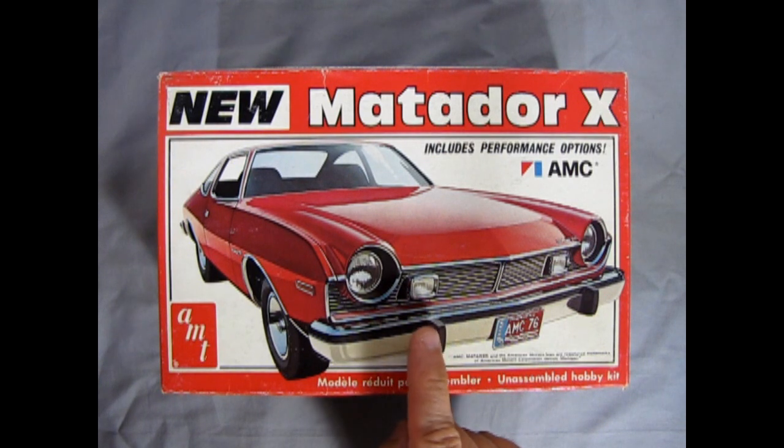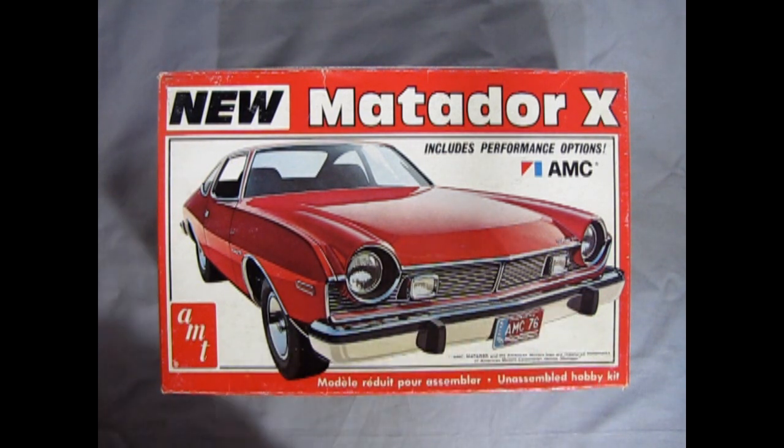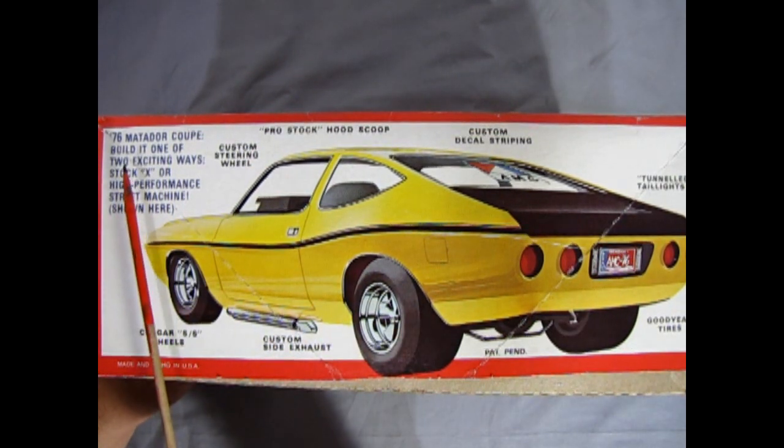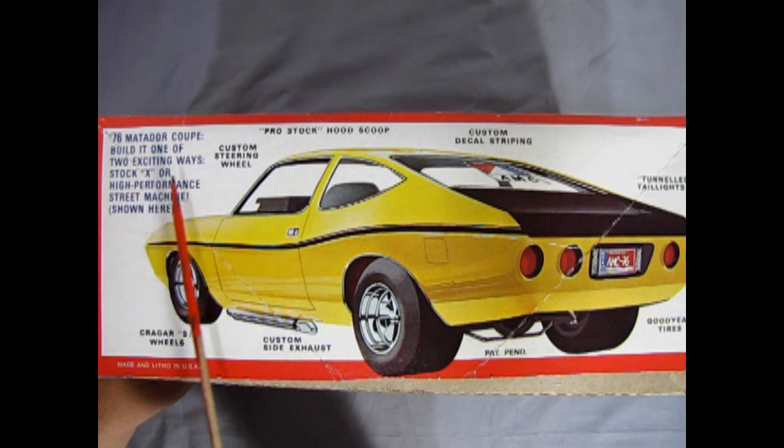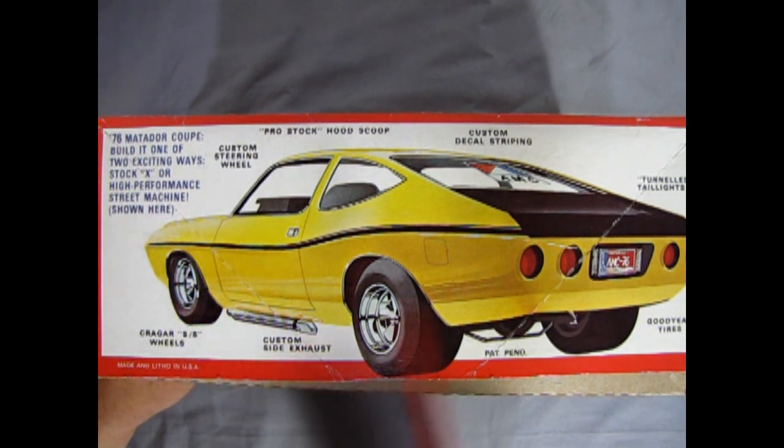This is the first year where they got rid of the circular turn signal lamps and put in the square ones for the grille. As we turn up to the side of the box we see it says 76 Matador Coupe. Build it one of two exciting ways, stock X or high performance street machine shown here.